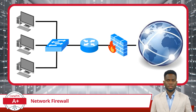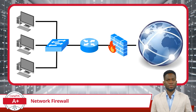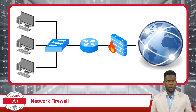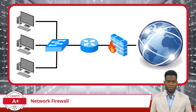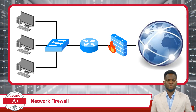When a data packet arrives at the firewall, it undergoes a thorough evaluation against these security rules. If the data packet aligns with the allowed parameters set in the security rules, the firewall permits it to pass through. This enables legitimate data to flow uninterrupted towards its intended destination, maintaining the network's operational efficiency and communication needs.